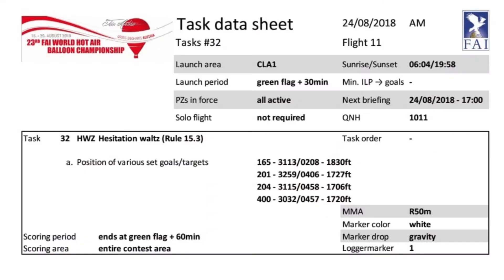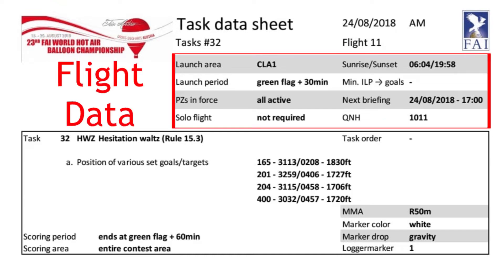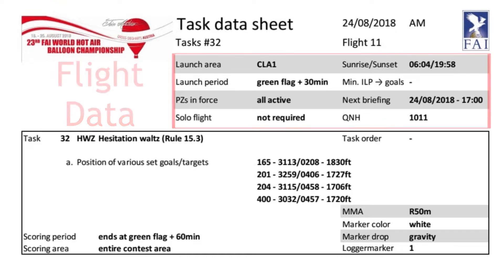Task datasheets come in different styles, normally dependent on the director, but the general layout and key information is always the same, made up of two parts: flight data and the task data.